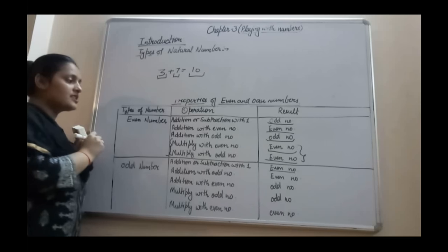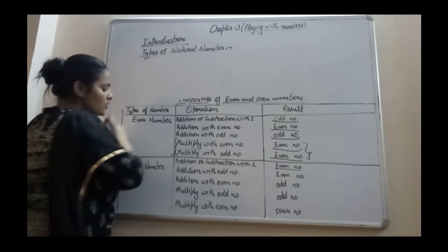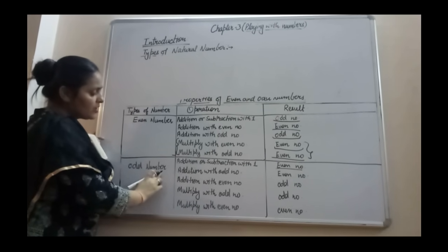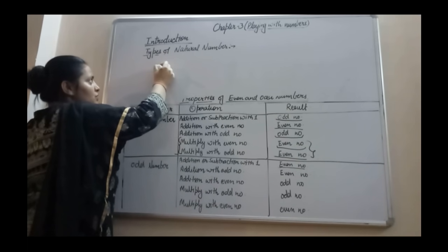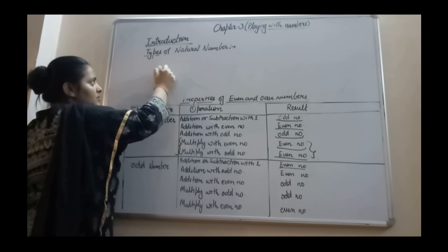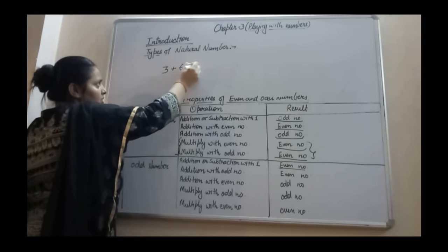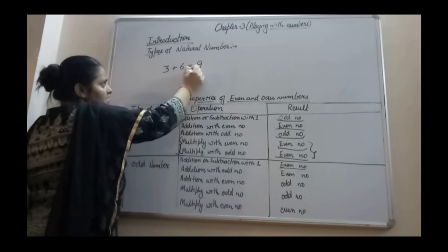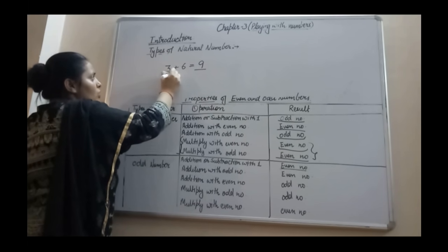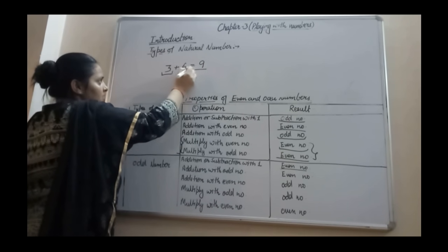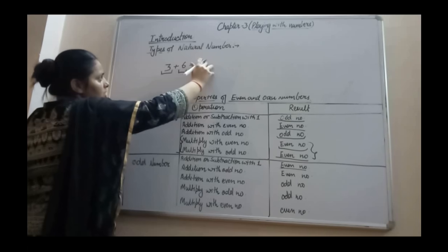Sum of two odd numbers is always an even number. Next: odd number plus even number. When you add an odd number to an even number, your answer is an odd number. So odd number plus even number gives an odd number.